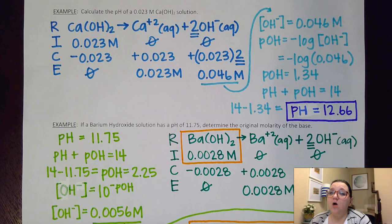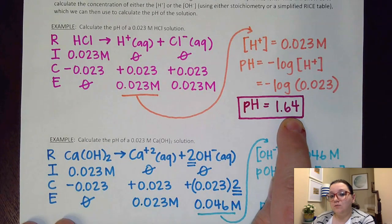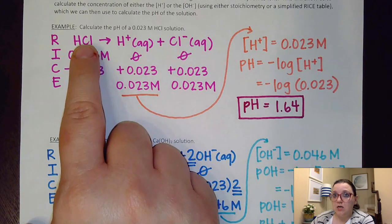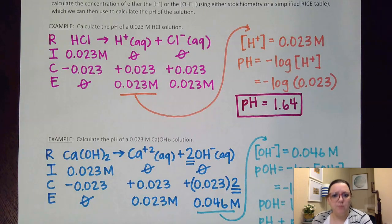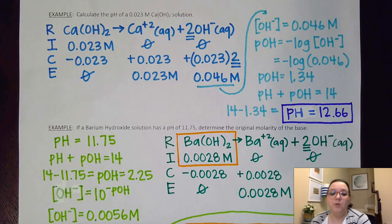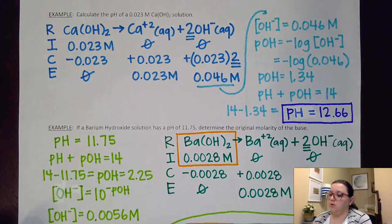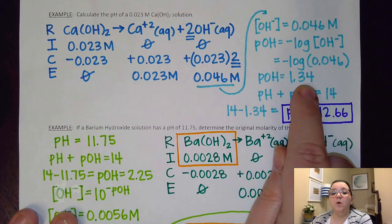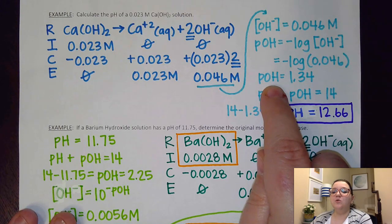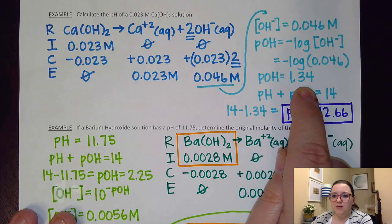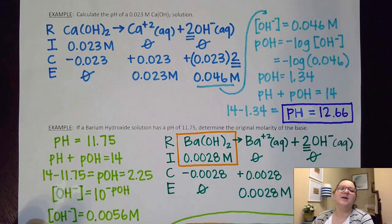Whenever I get a pH answer, I always ask myself: does it make sense for what I have? A pH of 1.64 makes sense for the acid because it's below 7 at 25°C. For calcium hydroxide, a pH of 12.66 makes sense because it's a base and above 7 at 25°C. The common mistake is forgetting that 1.34 is pOH, not pH. If you thought it was pH, ask yourself if it makes sense for a base — and you'd realize it doesn't. Double-checking that your answer makes sense helps you catch your mistake.